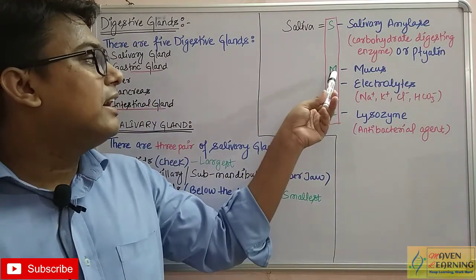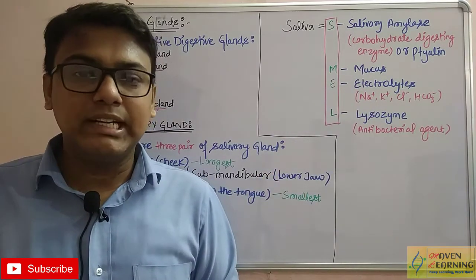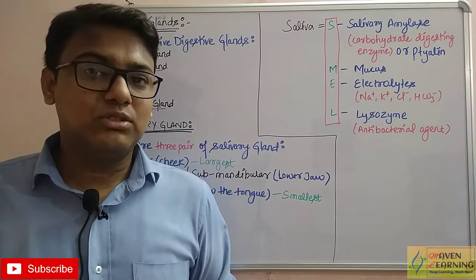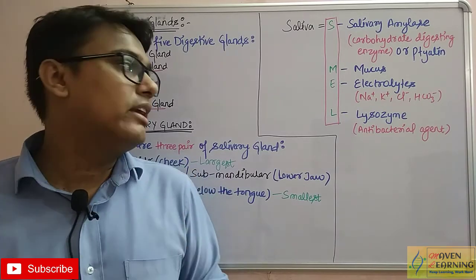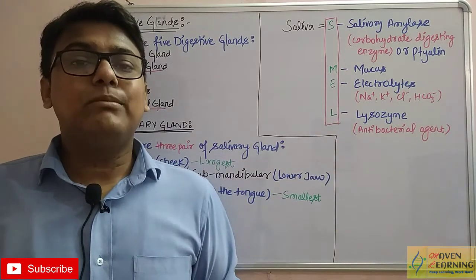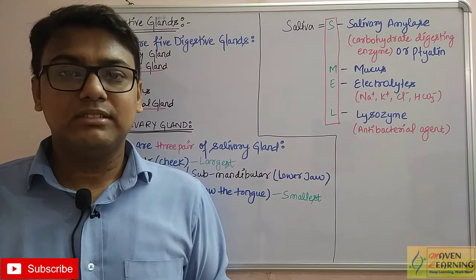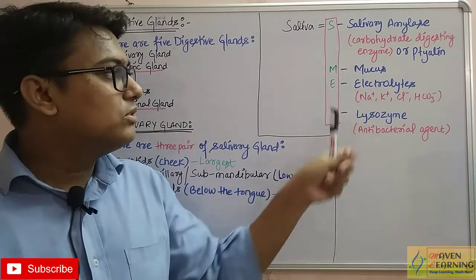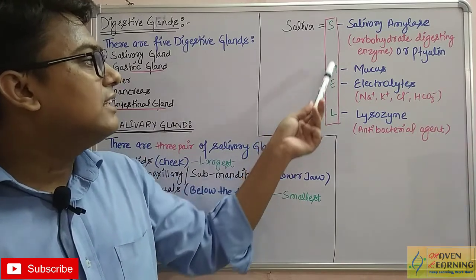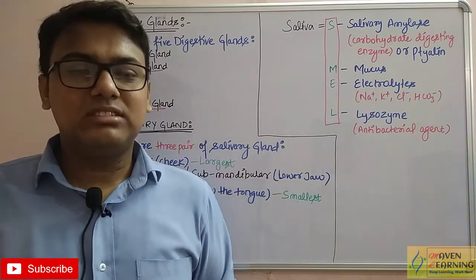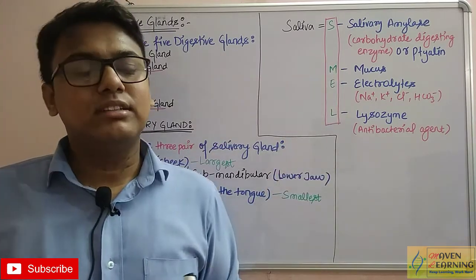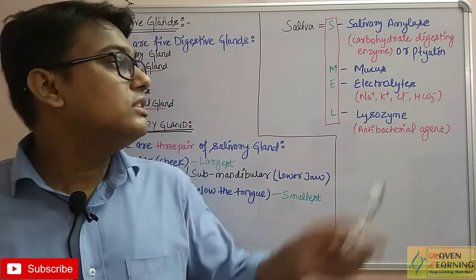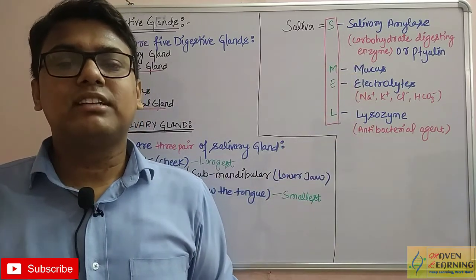The second component is mucus, which lubricates. Third are electrolytes: sodium, potassium, chloride, and bicarbonate. Fourth is lysozyme, which is an antibacterial agent that prevents infection. A mnemonic for these four is SMEL — S for salivary amylase, M for mucus, E for electrolytes, L for lysozyme. Saliva also contains some water.